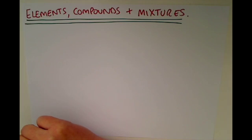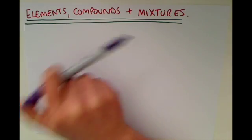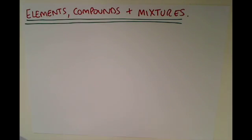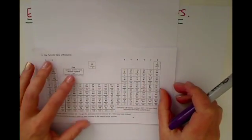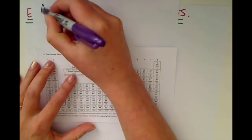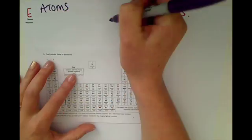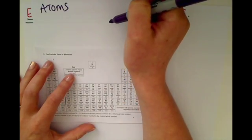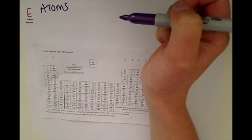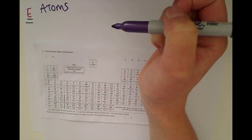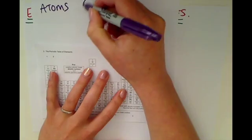You need to be able to understand the difference between elements, compounds and mixtures. First of all, we need to introduce the idea that everything is made up of something called atoms. So this pen is made up of atoms, the piece of paper is made up of atoms, the air around us is made up of atoms. Every single thing on this planet is made up of atoms, and they are like the building blocks of everything.